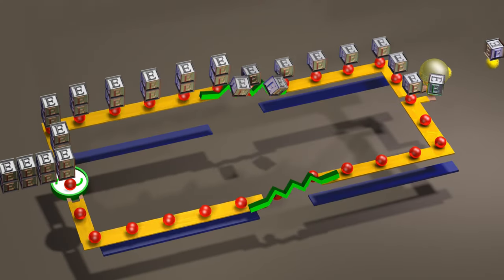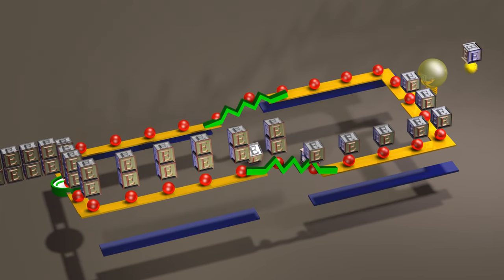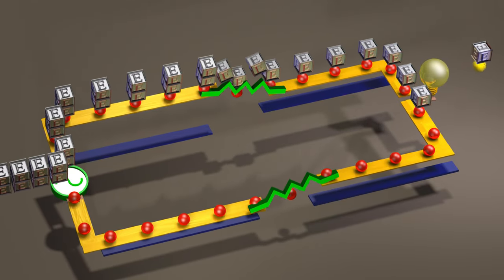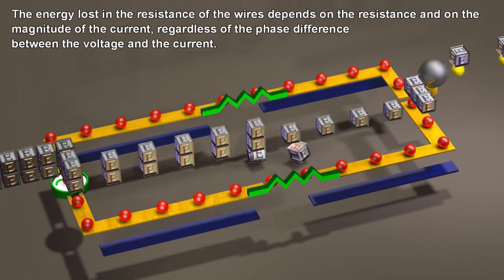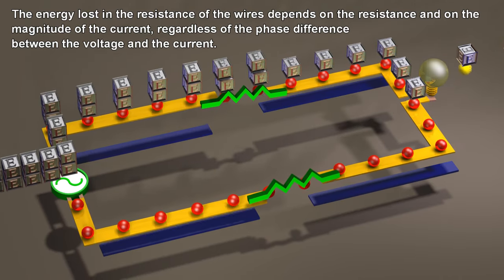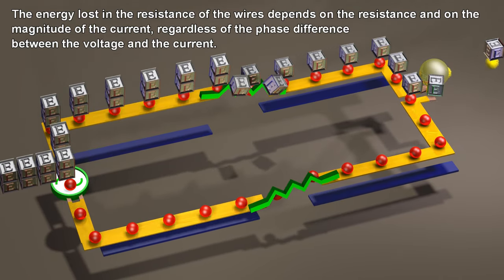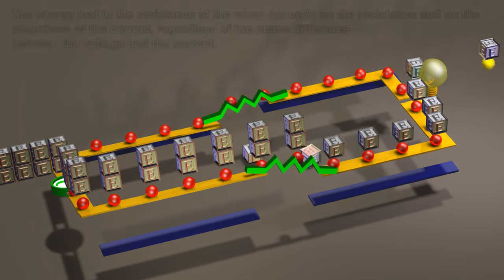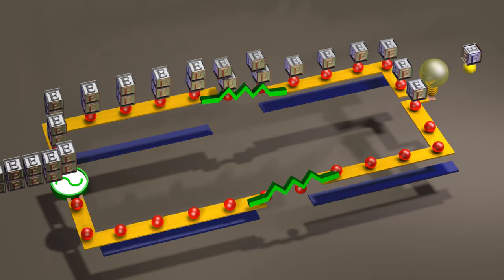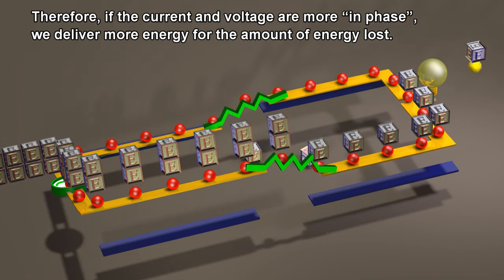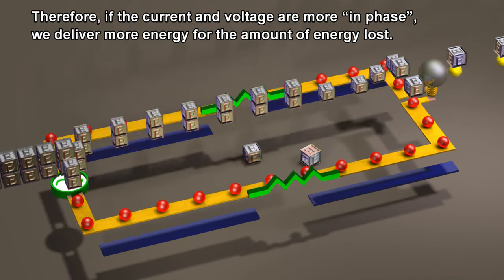Having the current and voltage more in phase with each other is desirable, because some of the energy is lost in the resistance of the wires. The energy lost in the resistance of the wires depends on the resistance and on the magnitude of the current, regardless of the phase difference between the voltage and the current. Therefore, if the current and voltage are more in phase, we deliver more energy for the amount of energy lost.